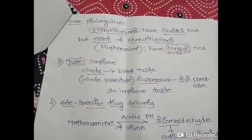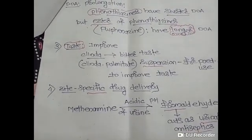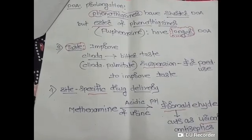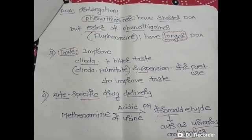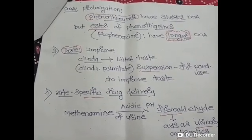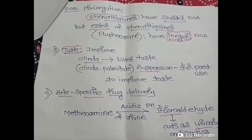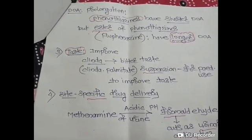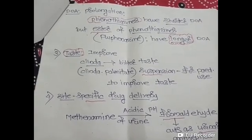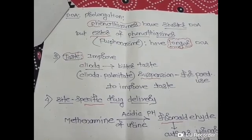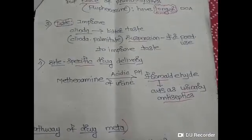Prodrugs can also be used to improve taste. For example, clindamycin has a bitter taste, but clindamycin palmitate suspension, which is a prodrug, is used in the pediatric age group because it has a better taste and is suitable for children.